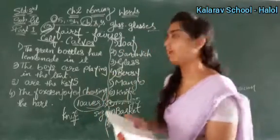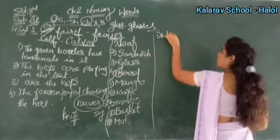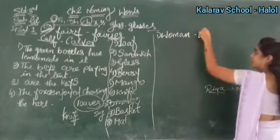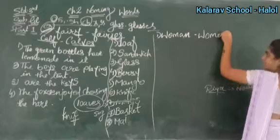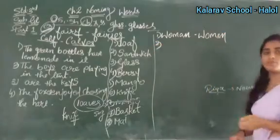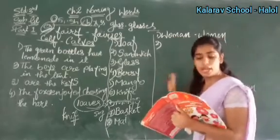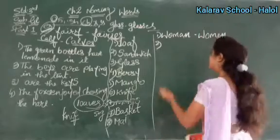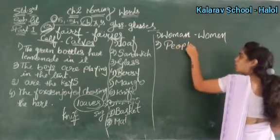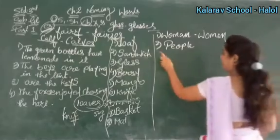Dekho kya karna hai: woman hai — W-O-M-A-N — singular. Isko plural kya karenge? Women. E ho gaya toh yeh plural ho gaya. Ismein NS nahi aaya. Woman se women jaayega. Person diya hai — matlab ek insaan. Aur plural mein likhenge: people. Toh bohot saare person hon, jo bohot saare log hote hain — for that we will write people.